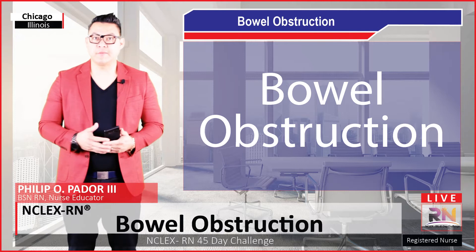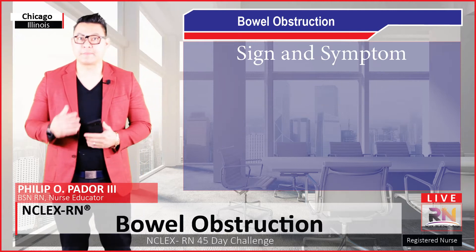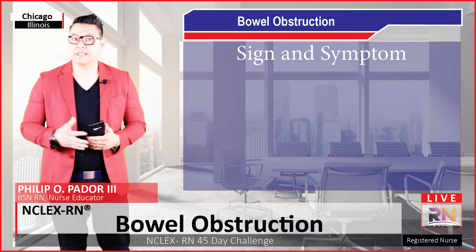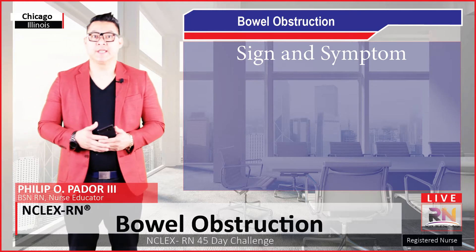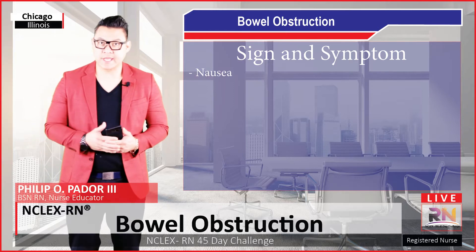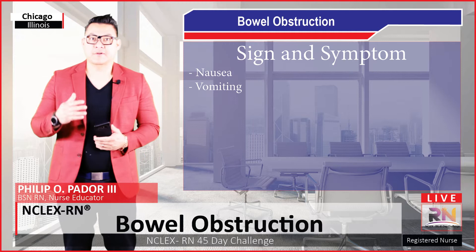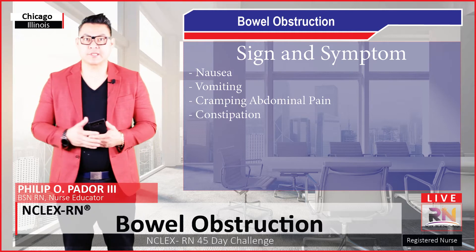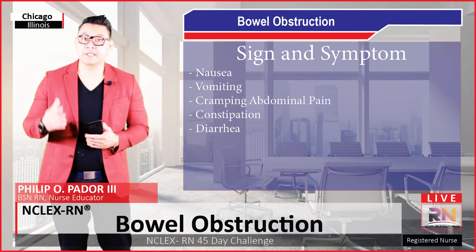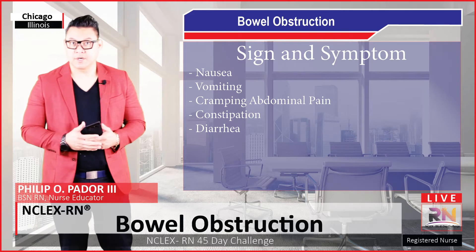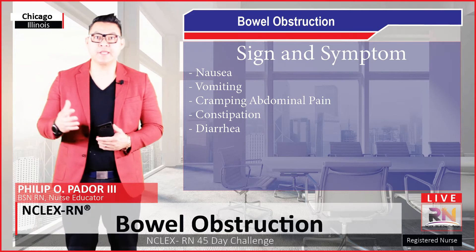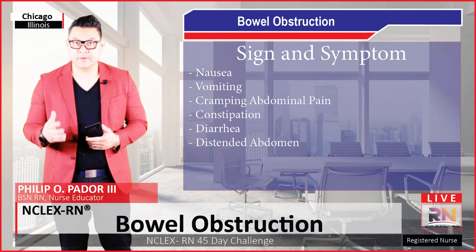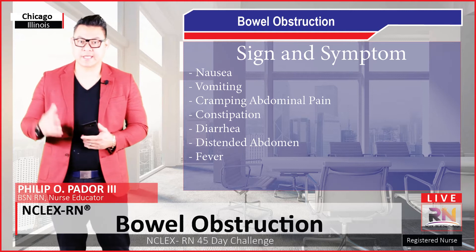Let's first begin with the signs and symptoms and how a person can present. The signs and symptoms of a bowel obstruction include nausea, vomiting, cramping, abdominal pain, constipation, and inability to pass stool or diarrhea. Possibly there can be a distended abdomen, fever, as well as tachycardia.